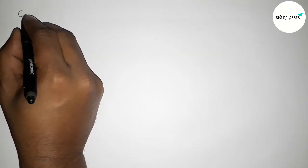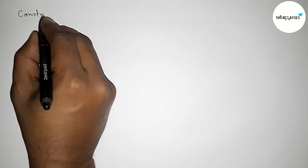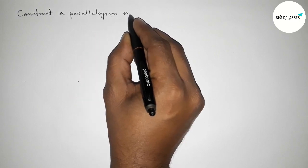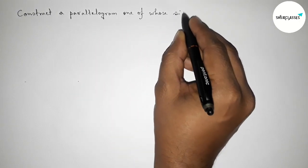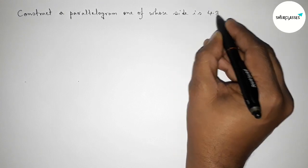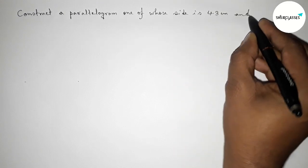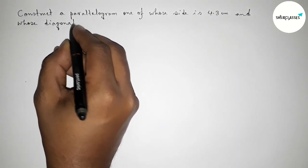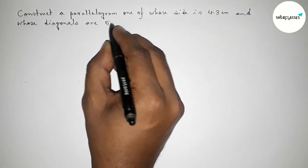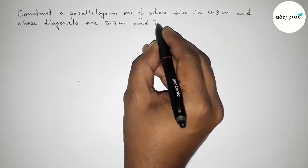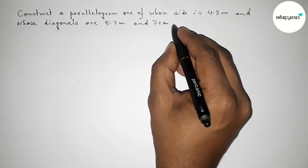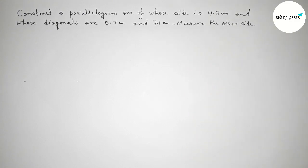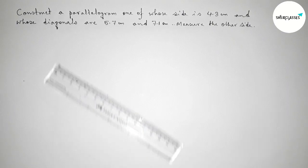Hi everyone, welcome to SH Share Classes. Today in this video we have to construct a parallelogram one of whose sides is 4.3 centimeters and the two diagonals are 5.7 centimeters and 7.1 centimeters. I am going to construct this parallelogram in an easy way, so please watch the video till the end.